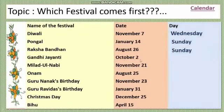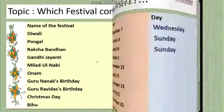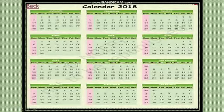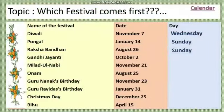Then 2nd October — Gandhi Jayanti. What day is 2nd October? Let's see October. Number 2, 2nd — which day is it? Tuesday. So 2nd October is Tuesday.